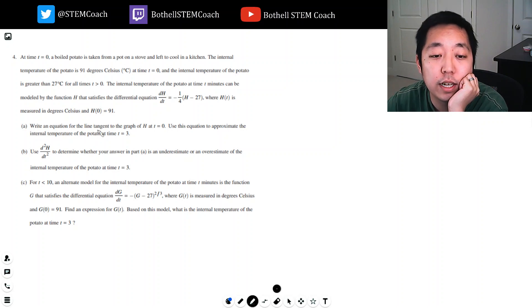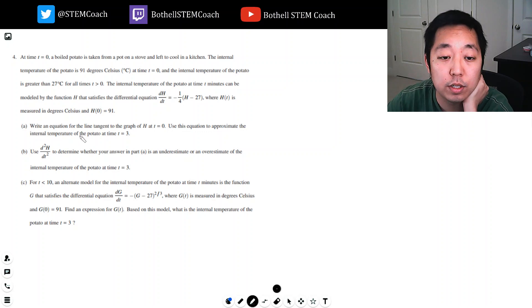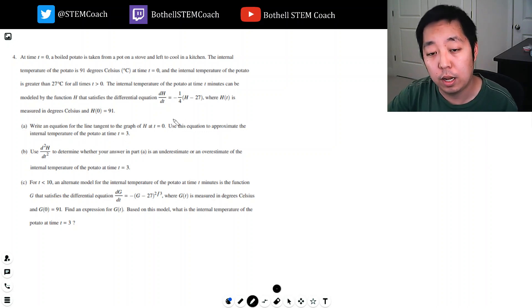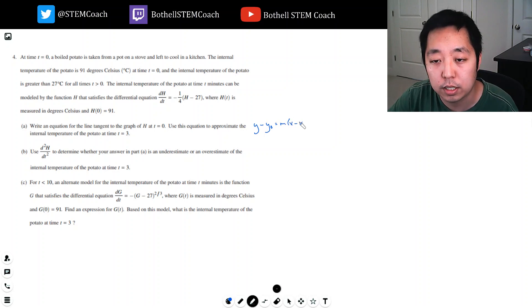Write an equation for the line tangent to the graph of h at t equals zero. Use the equation to approximate the internal temperature at time t equals three. When I want a line equation, it's slope-point form: y minus y₀ equals m times x minus x₀. I need a point and I need the slope.